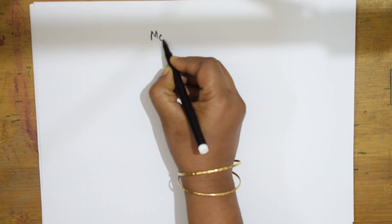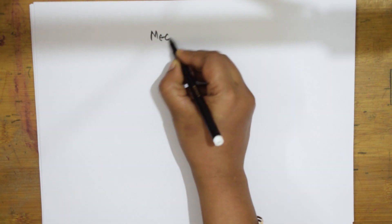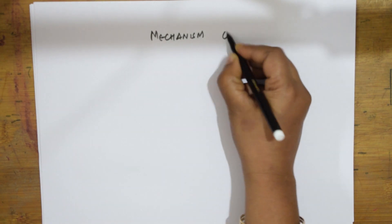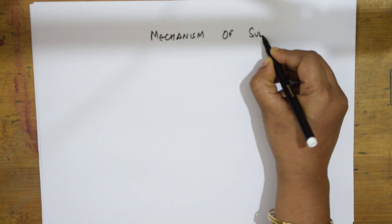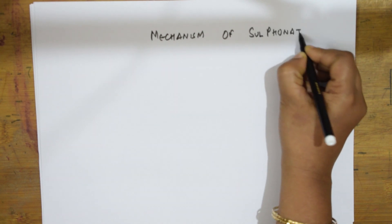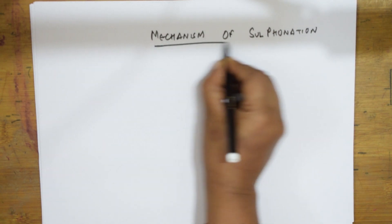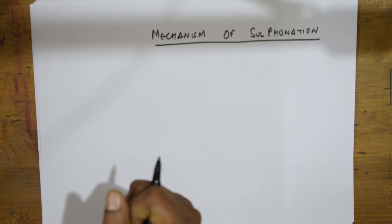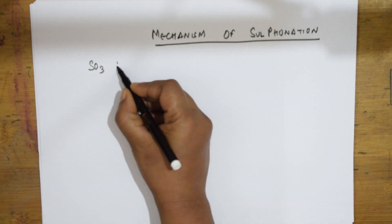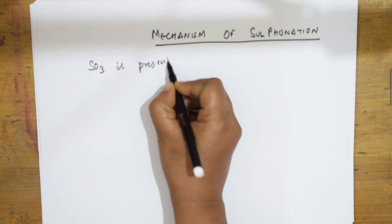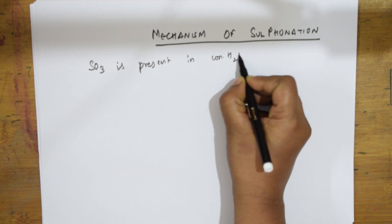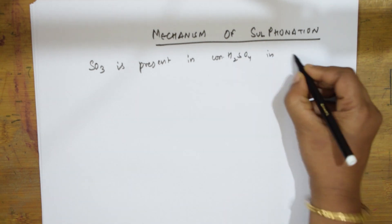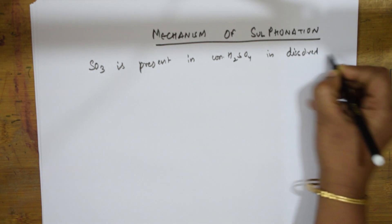Now let us see the mechanism of sulfonation. First, SO3 is present in dissolved state in concentrated sulfuric acid. It can also be produced by the interaction of two molecules of sulfuric acid — we will see how.